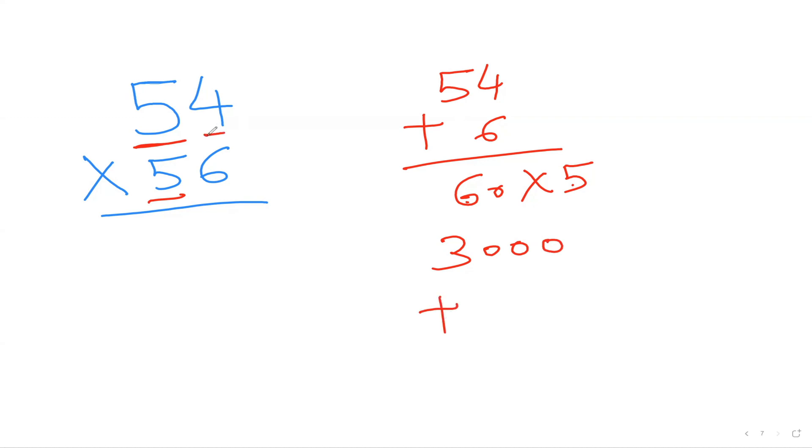And then my last digit and last digit multiplication. 4 times 6 are 24. So that is going to be 3024. Is it not amazing?